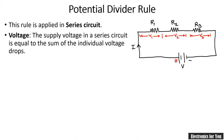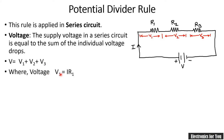In the series circuit, the voltage V is equal to V1 plus V2 plus V3. That is, the supply voltage in a series circuit is equal to the sum of individual potential drops. V1, V2, and V3 are the individual potential drops. V1 equals I times R1, V2 equals I times R2, and V3 equals I times R3, where I is the current flowing through the series circuit.